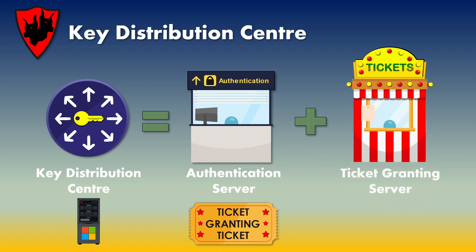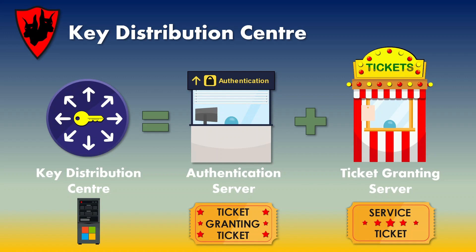The second server service is the ticket granting server. This is the server which is contacted when the user tries to access a service on the network. The client sends its proof that it has been authenticated and the name of the service on the network it wants to use. The ticket granting server then provides a new ticket called a service ticket, which is sent to the user and then forwarded onto the server the user wants to access. For example, as an authenticated user on a domain, I want to access a folder on a file server. My client sends the digital proof that I have been authenticated and also sends the name of the resource I'm trying to access — the file server. The ticket granting server checks all my information and sends me back a ticket I can then present to the file server to get the file.